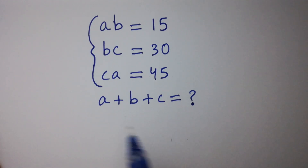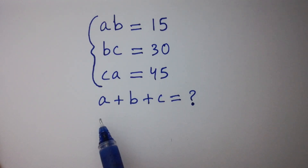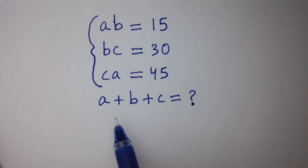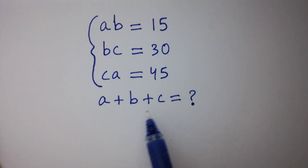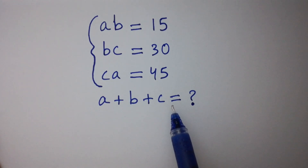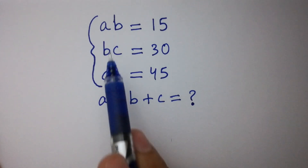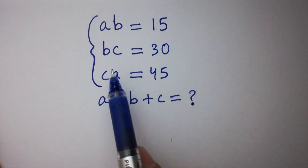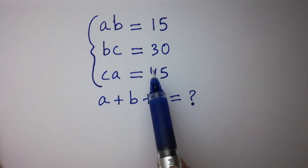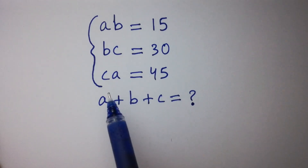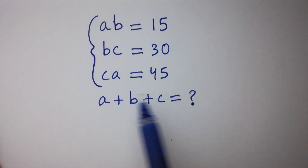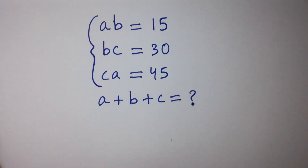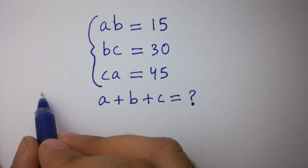Hello friends. Find the value of a plus b plus c if ab equals 15, bc equals 30, and ca equals 45. Let's have a solution.